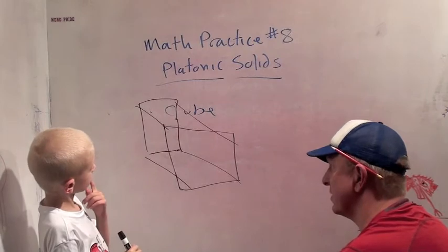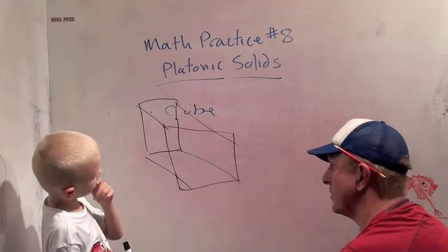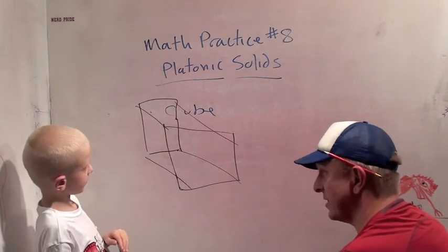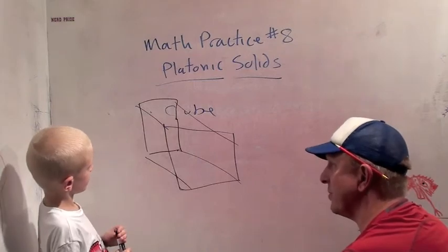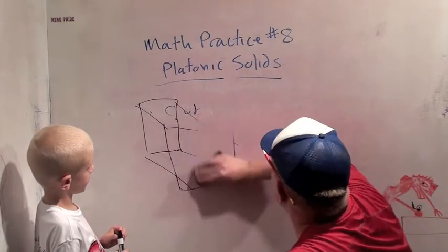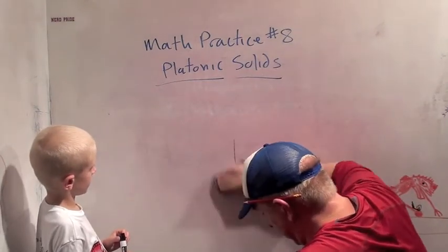How many sides does a cube have? Six. Eight. Six. Six. Good. And they're all what shape? Square. They're all squares. Okay. Very good. All right. You ready for the next one?